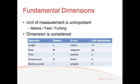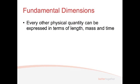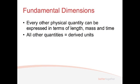We also have electrical current, which is I, measured in amperes. And lastly, we have luminous intensity, denoted by J, measured in Kandela. Now with fluids, we're only going to deal with the first three of these: length, mass, and time. Because essentially everything else can be derived from these. Every other physical quantity can be expressed in terms of length, mass, and time — all other units like newtons, velocity, and so on are derived from length, mass, and time.